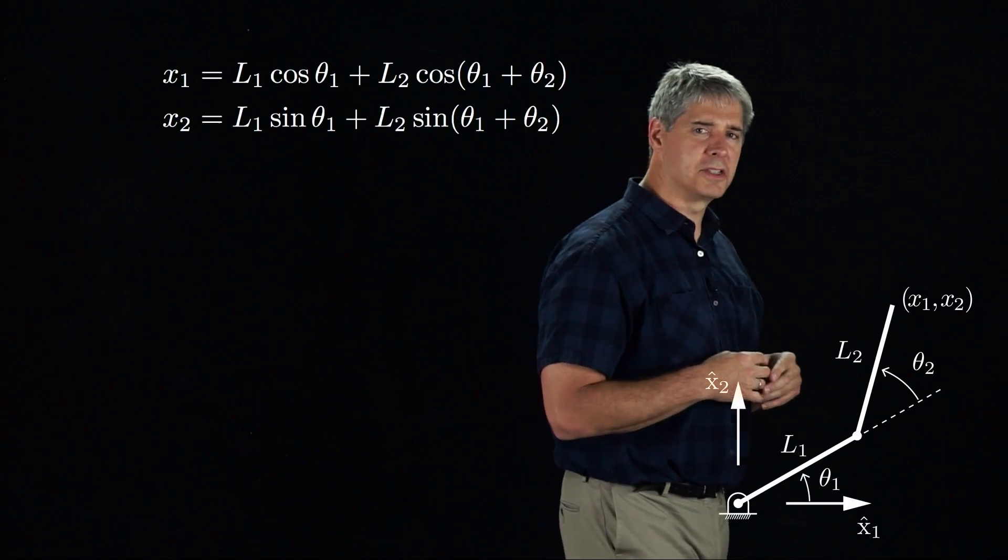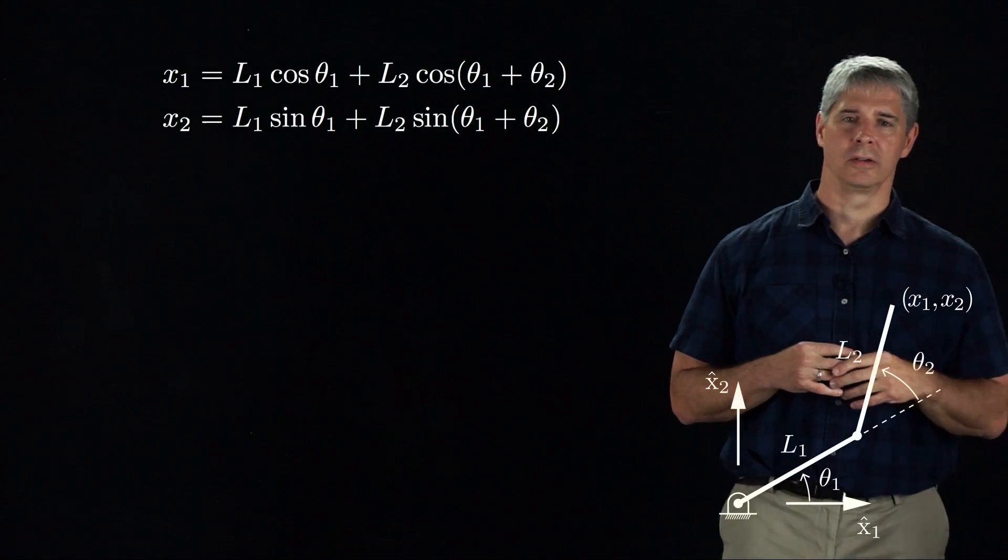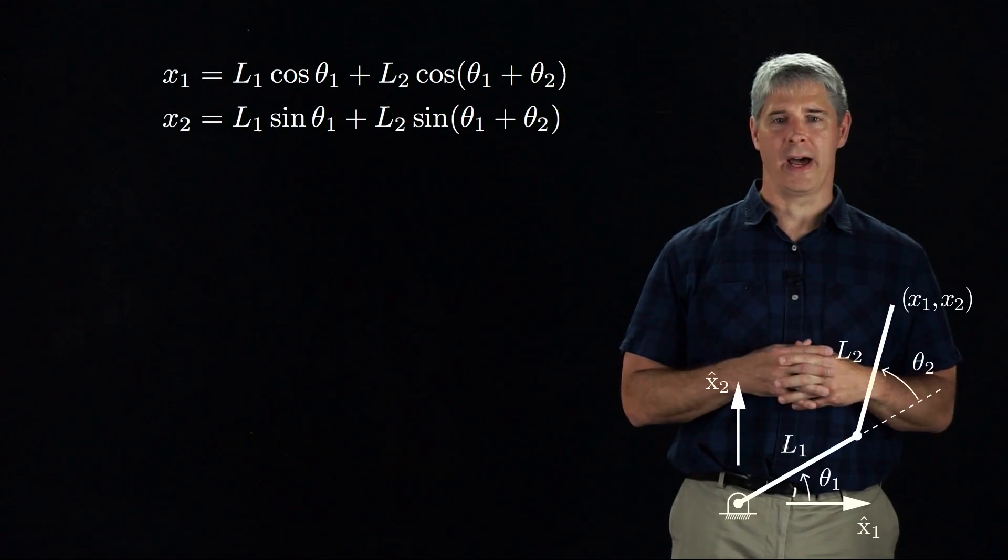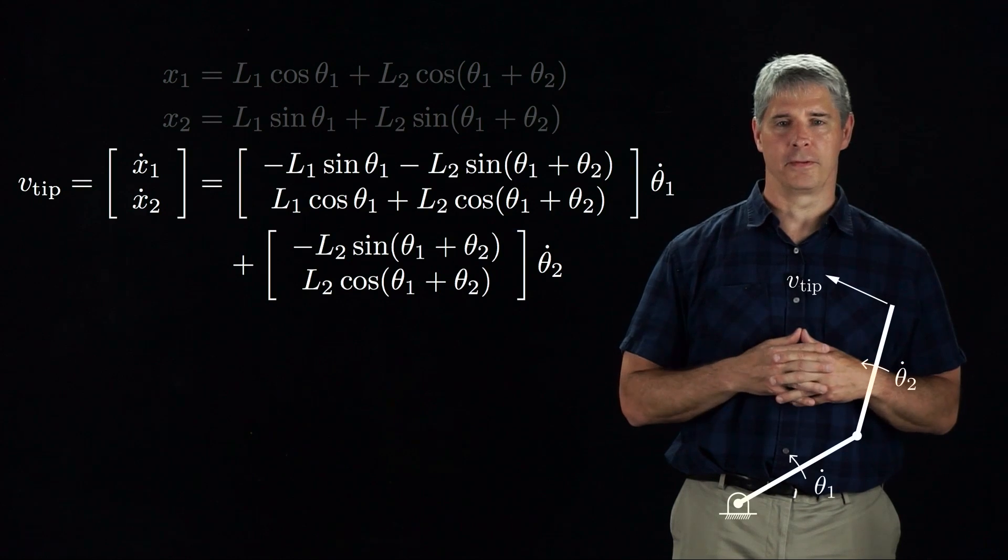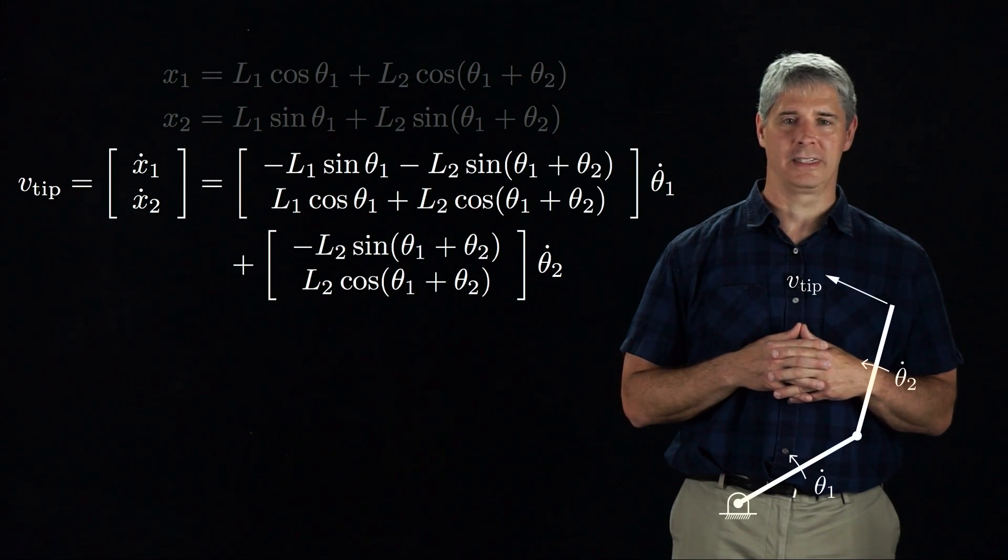Let's look at a 2R arm as an example, where x1 and x2 are the end effector coordinates. The forward kinematics are given by these equations. We take the time derivative of the forward kinematics and we name the end point velocity v-tip.